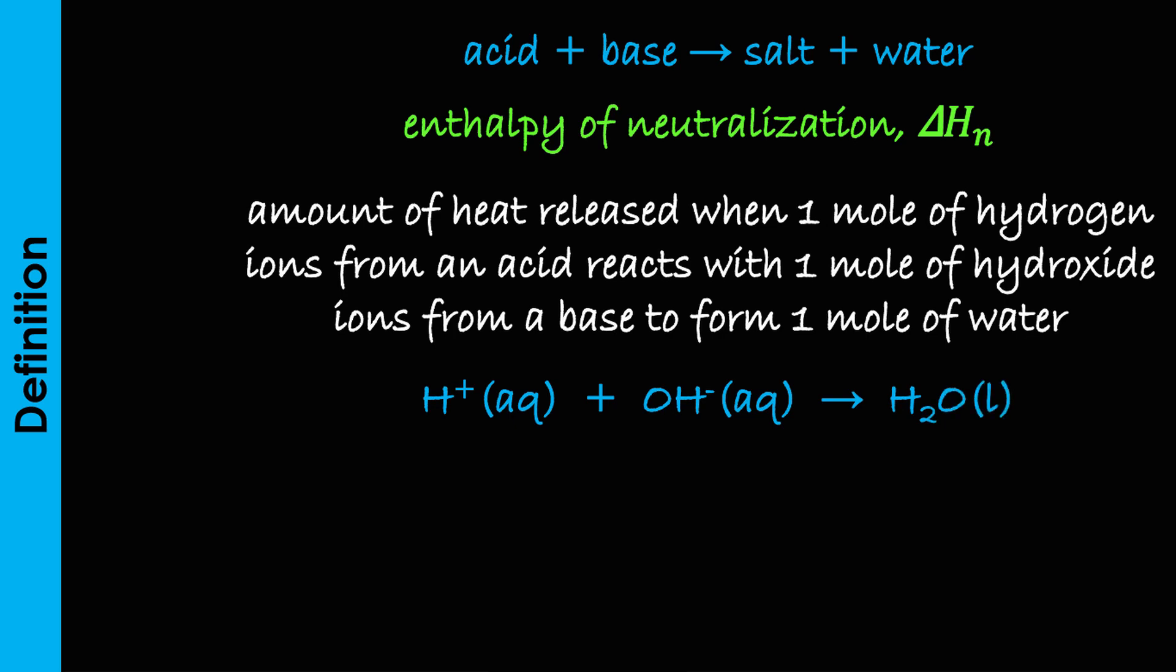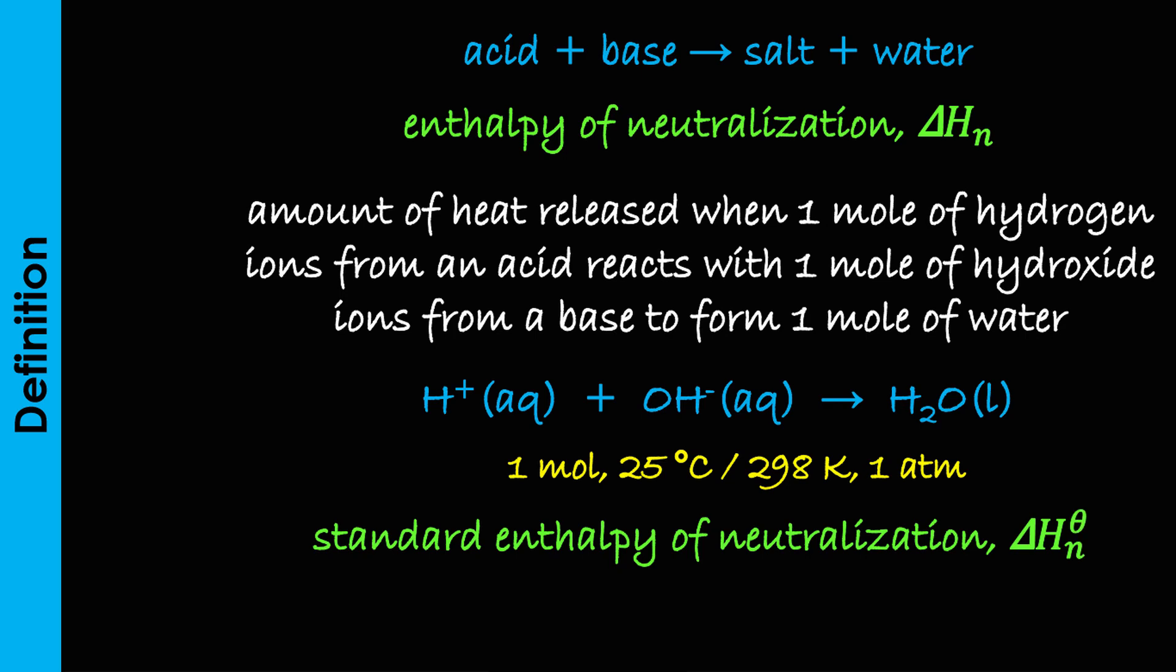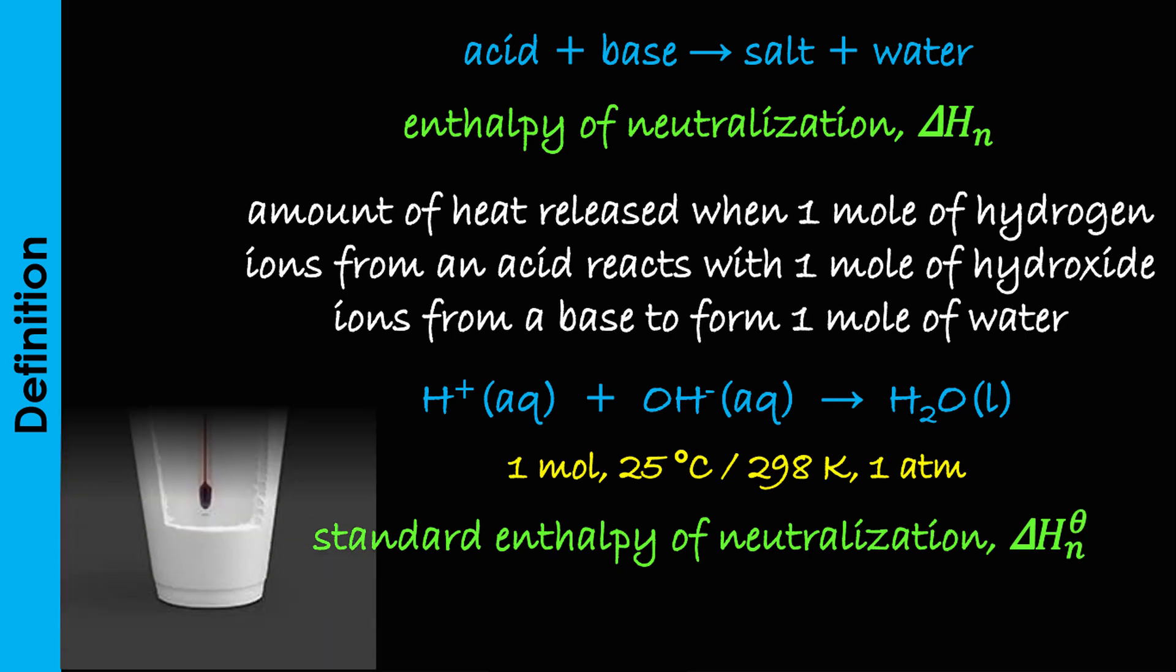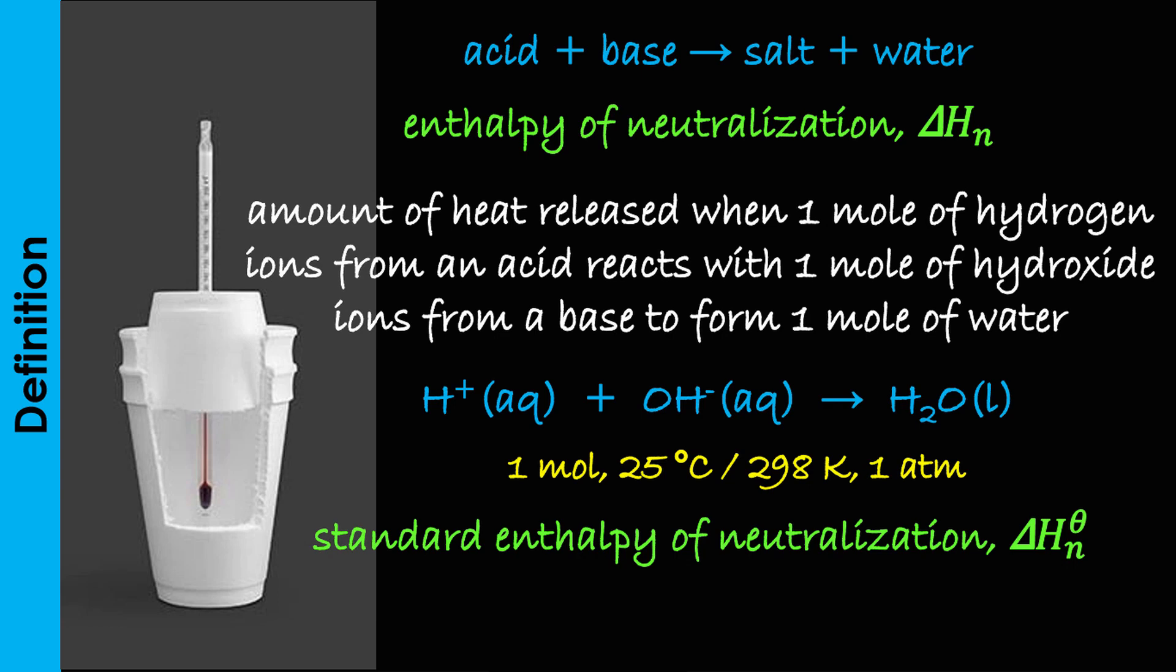When this occurs under standard conditions of 25 degrees and 1 atm pressure, it is said to be the standard heat of neutralization of the reaction delta-HN-theta. The device used for measuring the standard heat of neutralization is called a glass calorimeter. Just like other heat changes, it is measured in kJ per mole and like combustion, neutralization is an exothermic process. This implies that the value of the heat of neutralization of any reaction will always be negative.